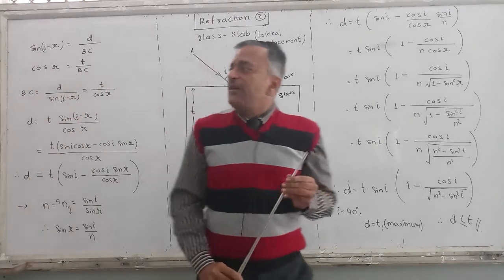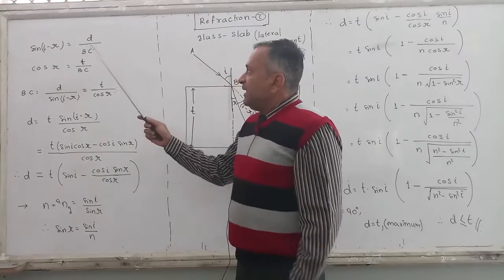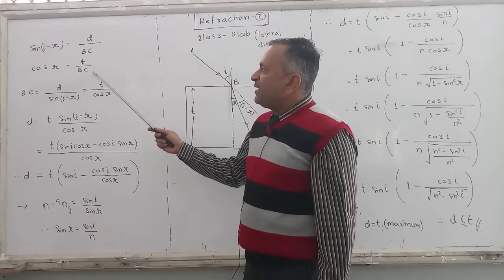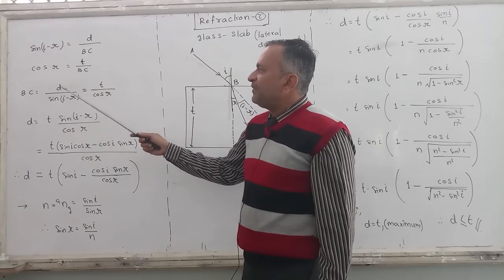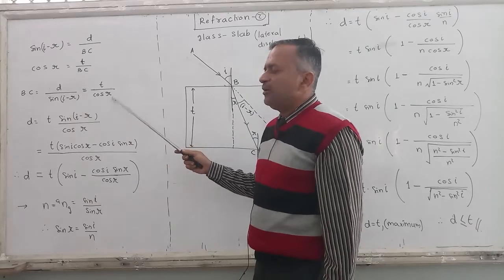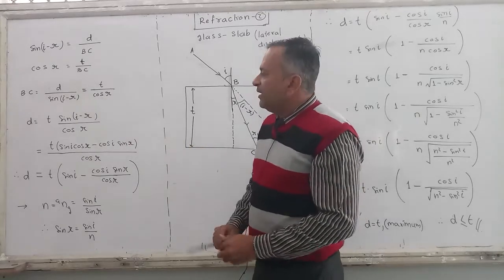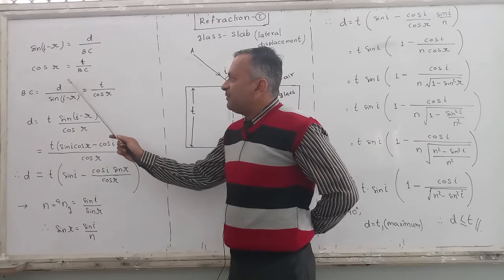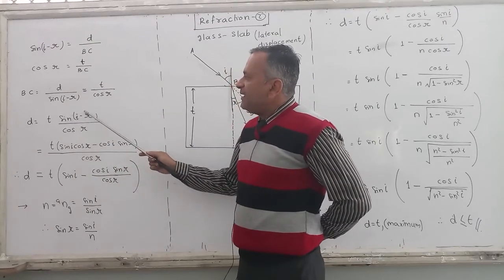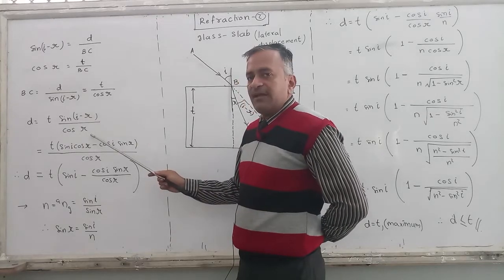Now, after finding these two, here also BC and here also BC is there. From these two equations, find the value of BC: D upon sin(I minus R) equals T upon cos R. Now from these two terms, find the value of D: T sin(I minus R) upon cos R.